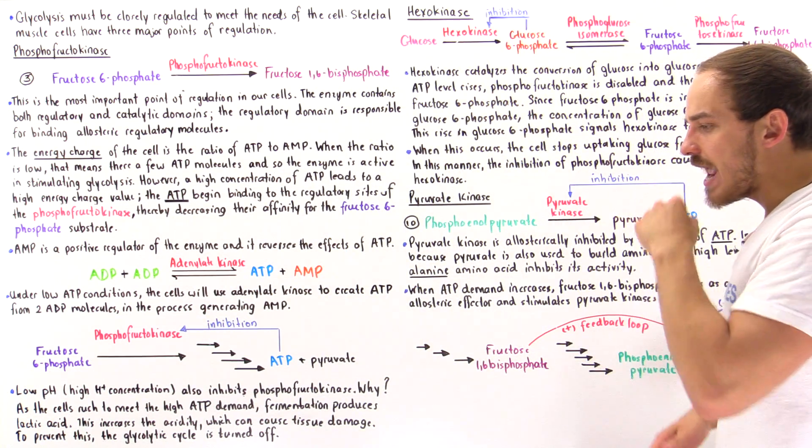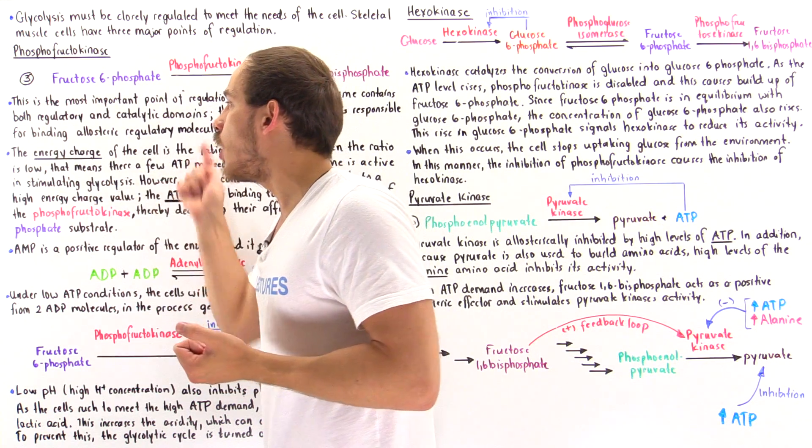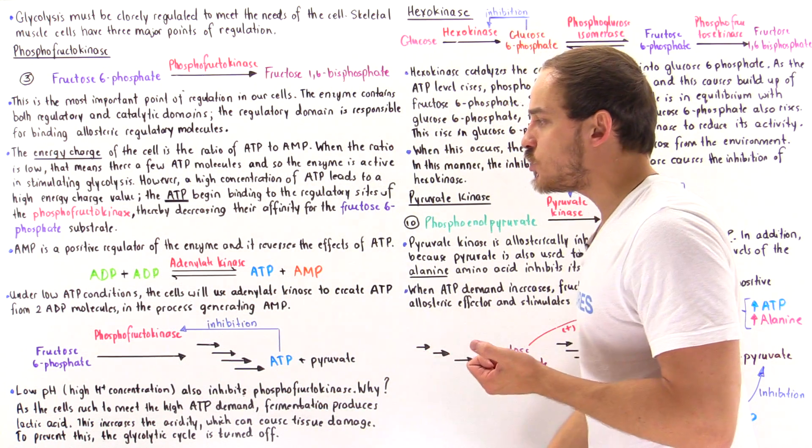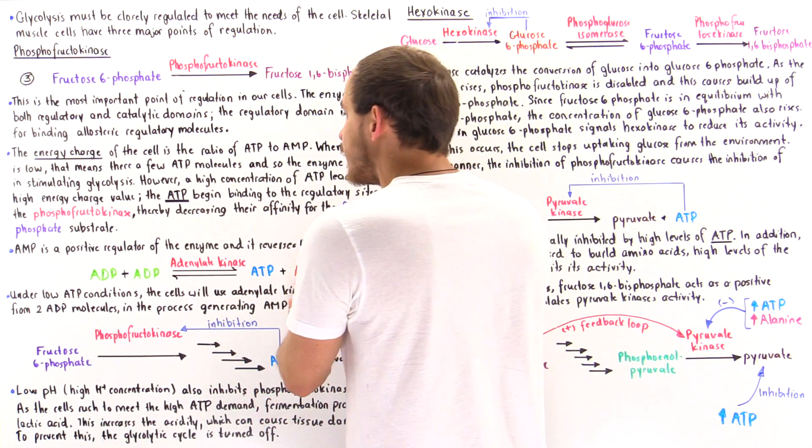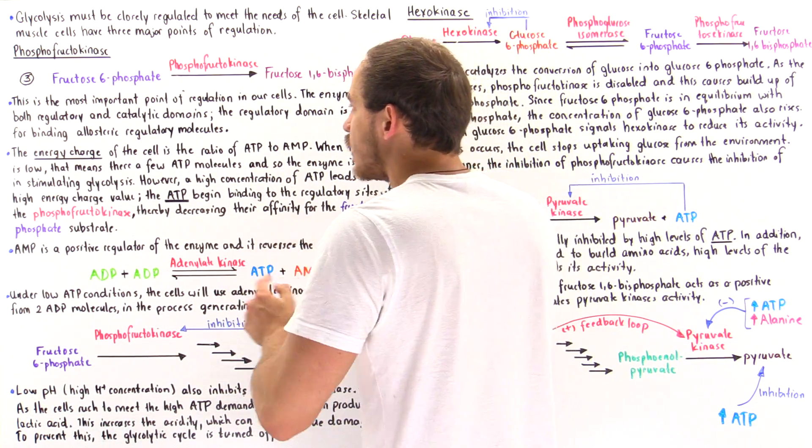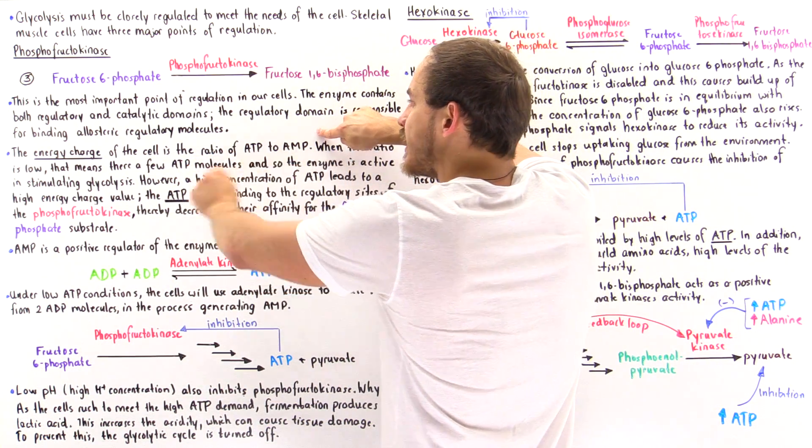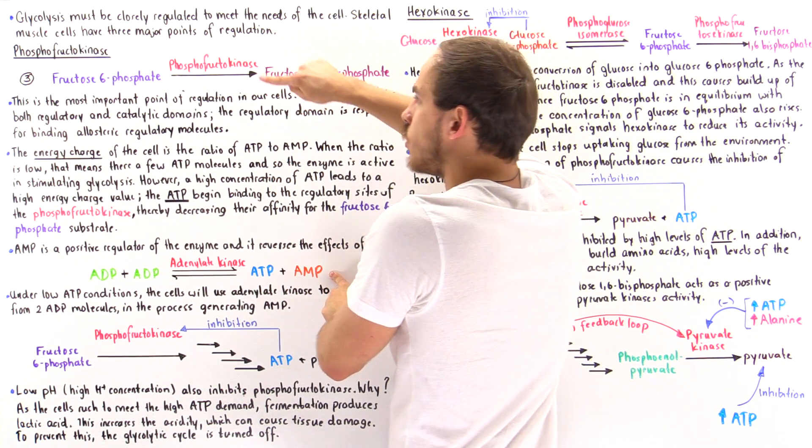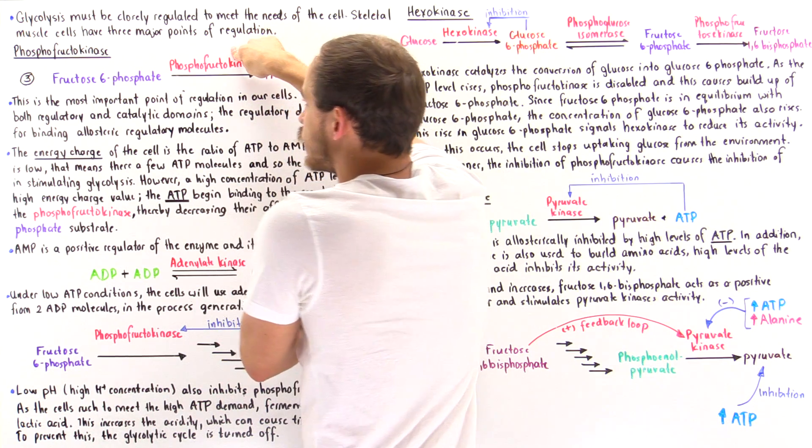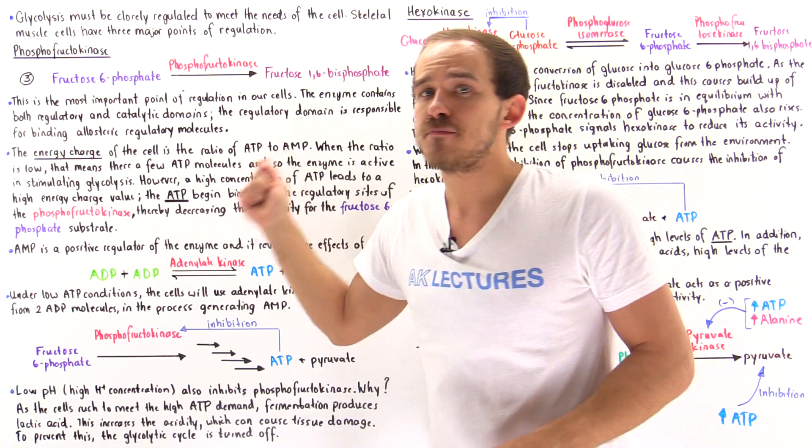But on the other hand, if we're exercising very vigorously, we're going to have a low energy charge value. We're producing ATP molecules as these ATP molecules are continually used up by the cells. And so we have a lowering in the energy charge ratio, and these molecules will stimulate the activity of phosphofructokinase.